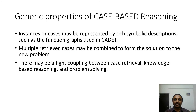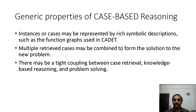These are the generic properties of case-based reasoning. All instances or cases may be represented by symbolic descriptions, such as the function graphs used in the case design tool example with the T-junction. Multiple retrieved cases may be combined to form a solution to a new problem — if a new problem comes in, the system checks the repository and either retrieves a direct match, combines one or two cases, or starts from scratch. There may also be tight coupling between case retrieval, knowledge-based reasoning, and problem solving.